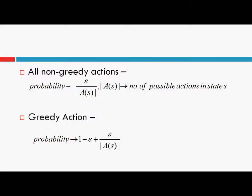In epsilon-greedy, a random action can also be a greedy action. Therefore, the total probability of selection of a greedy action is 1 minus epsilon plus epsilon over mod A_s. We can also write: the probability assigned to a random action is epsilon over mod A_s, and the probability assigned to the greedy action is 1 minus epsilon. The probability of selection of a non-greedy action is epsilon over mod A_s, and the probability of selection of the greedy action becomes 1 minus epsilon plus epsilon over mod A_s.